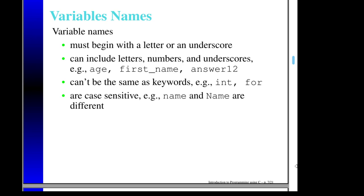Once you've gotten past the first letter, you can have other letters, underscores, or numbers — but you can't have spaces in a variable name. So if I want to write something like 'first name' and make it look like a space, I would need to use an underscore.